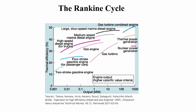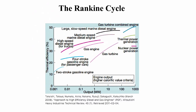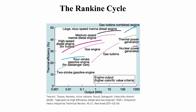Here's an interesting plot showing thermal efficiency for various kinds of power cycles as a function of power output. At the very low end, a two-stroke gasoline engine produces very small amounts of power with thermal efficiency only around 15% or so. As we increase power output, thermal power generation like a Rankine cycle and nuclear power generation fall at the largest output — on the order of a thousand megawatts — with efficiency on the order of about 33% up into the low 40s.